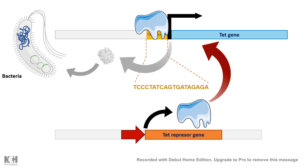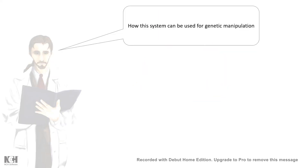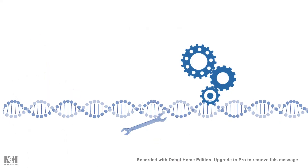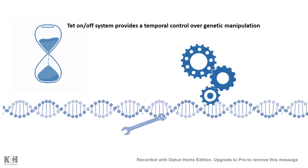Looking at this system, scientists thought about how they could use it to manipulate gene expression in a spatial and temporal manner — spatial meaning where, and temporal meaning when. In terms of gene expression, these two — where and when — are the most important aspects. The Tet-On/Tet-Off system gives us control over the temporal aspect of gene expression.